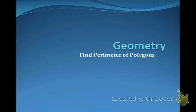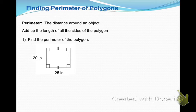This is going to be a rather short video because it's something you already know about, hopefully. It's about finding the perimeter of polygons. A perimeter is just the distance around an object, and in this case, the sides of a polygon. How you would find that is to add up the length of all the sides of the polygon.